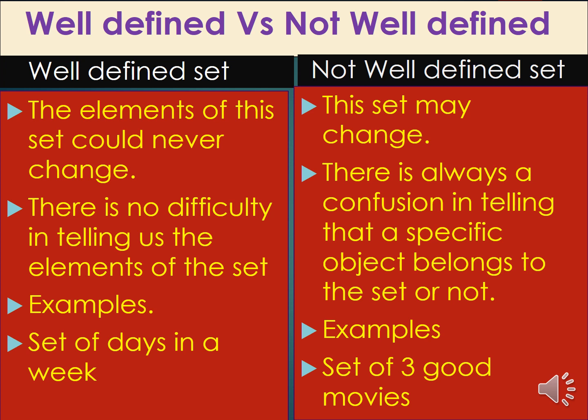Now look at an example of a not well-defined set: the set of 3 good movies. This set varies from person to person. One person may like Titanic, Gladiator, and Lawrence of Arabia, while someone else may like entirely different movies. So it is a not well-defined set since it varies from person to person.